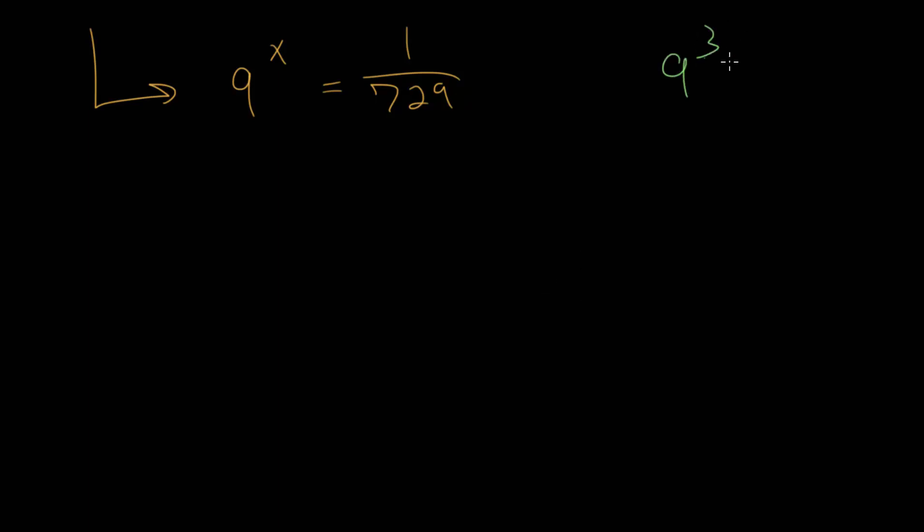Namely, 9 to the third power is equal to 729. So we can rewrite this as 9 to the x power is equal to 1 over 9 to the third power.